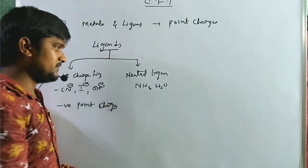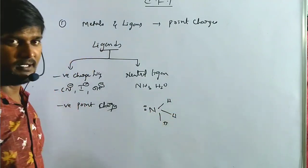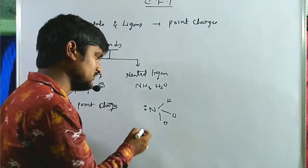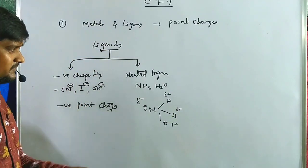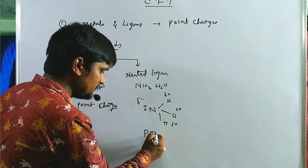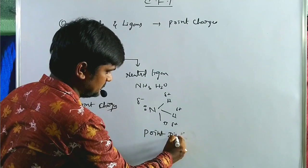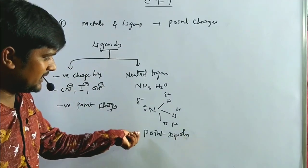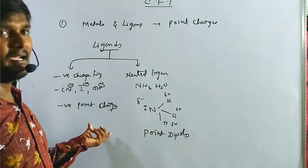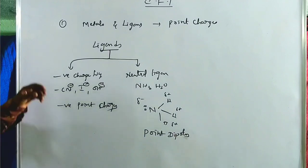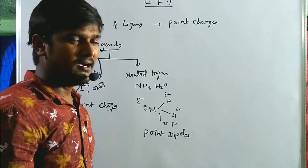Neutral ligands such as ammonia, water, pyridine, and carbonyl have lone pairs. Ammonia, for example, has lone pairs, so it has a dipole moment — a negative dipole end and a positive dipole end. Such types of ligands are nothing but point dipoles. The negative end of the point dipole interacts with the central metal atom. The central metal atom is accounted for as a cation point charge.